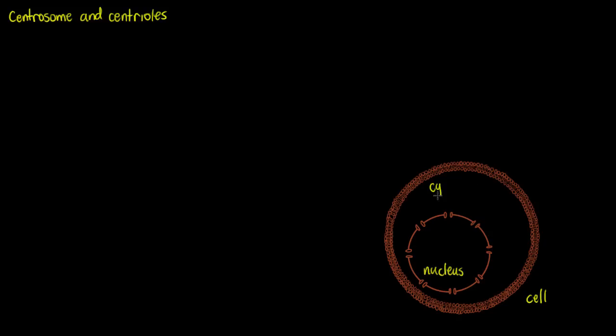So we have our cell here with its nucleus and the cytoplasm outside of our nucleus. Now what is our centrosome and where are we going to find it within the cell? Well, we're going to find it in the cytoplasm. So this is going to be our centrosome here. Well, this is actually going to be two centrosomes.